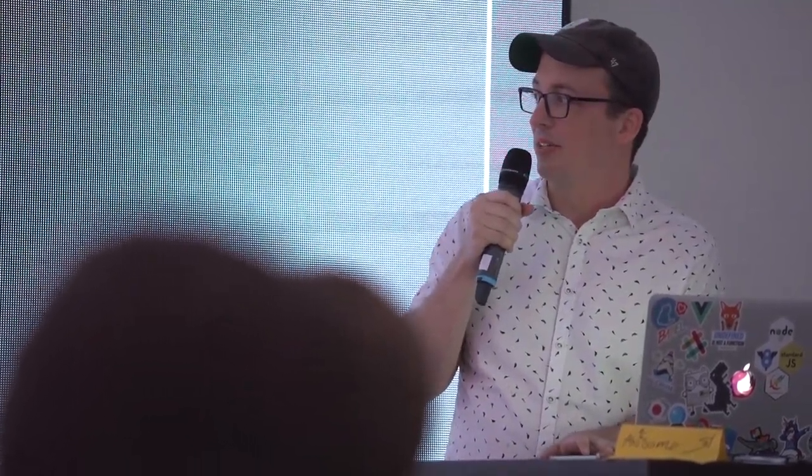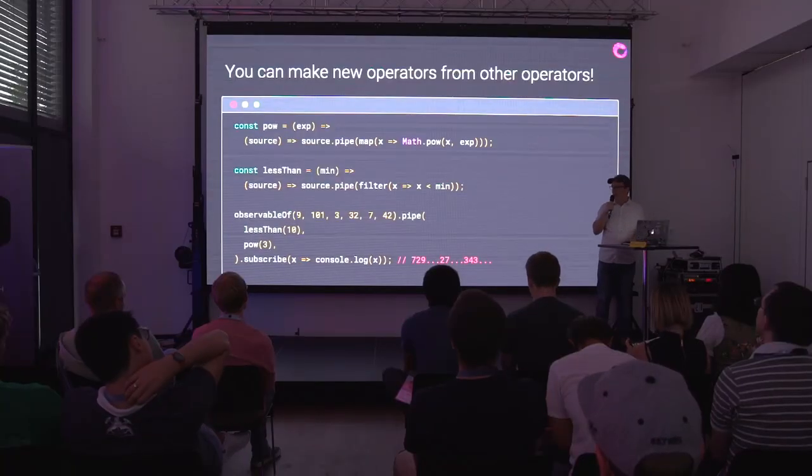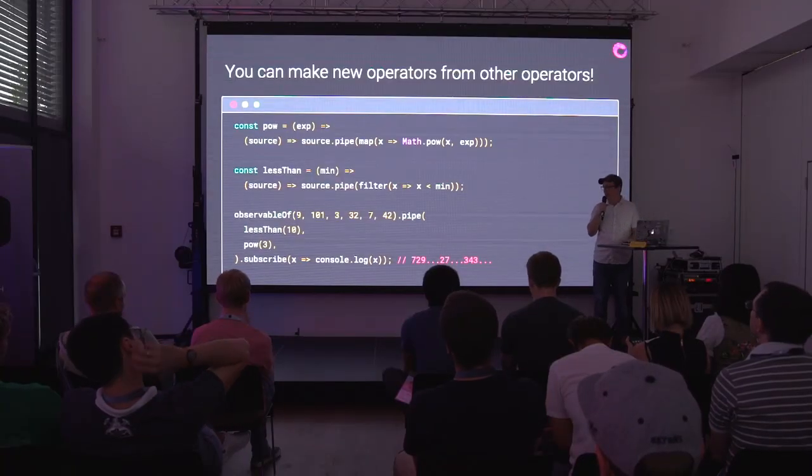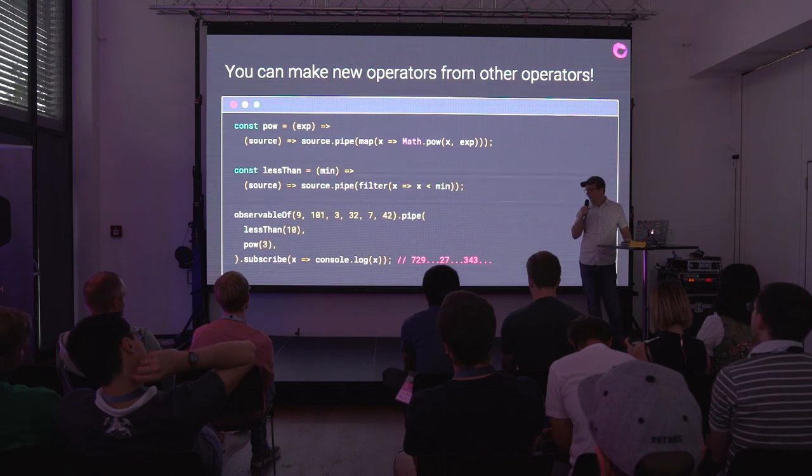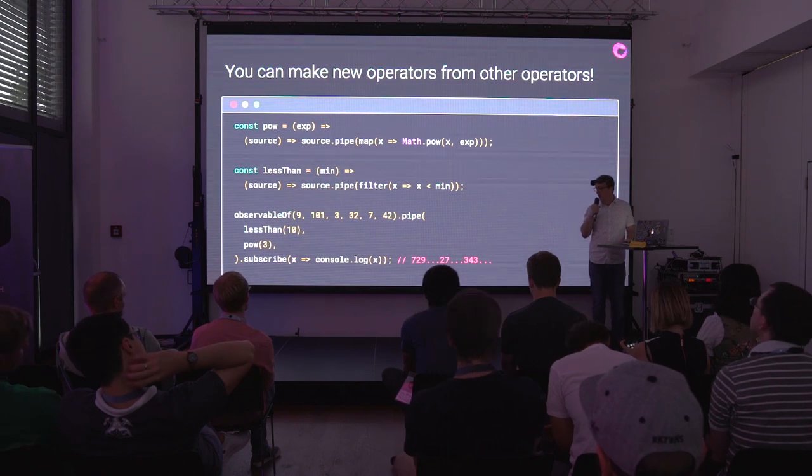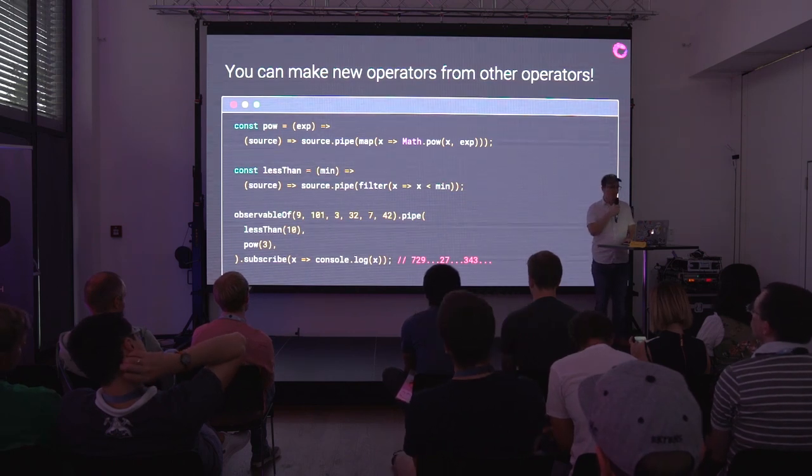Similarly, there's a less-than operator I made — which checks that a value is less than some value. I should have called it 'max.' You can then say, from this observable of values, give me all the values less than 10 and take them all to the power of 3, and it gives you a set of results when you subscribe.